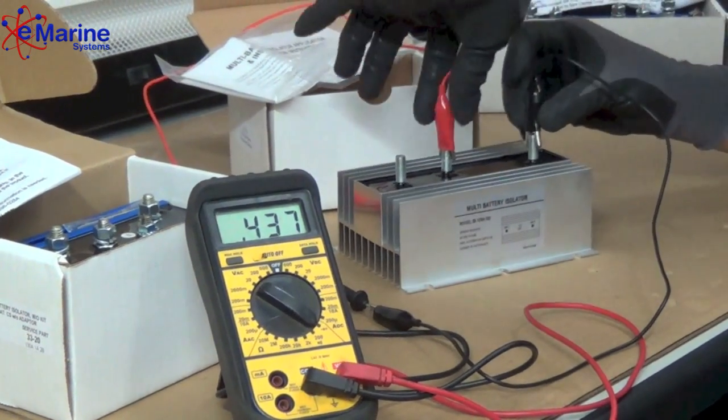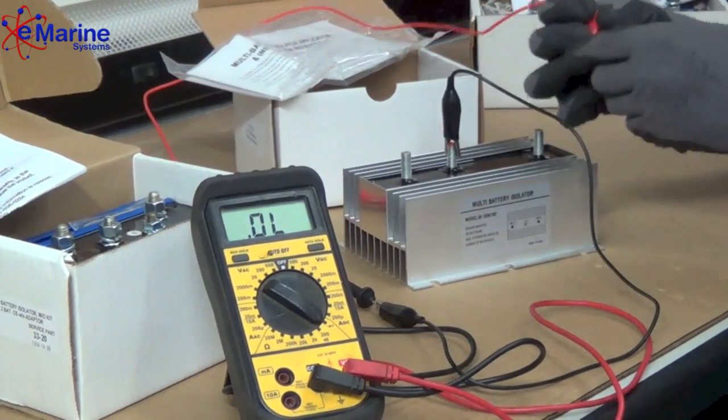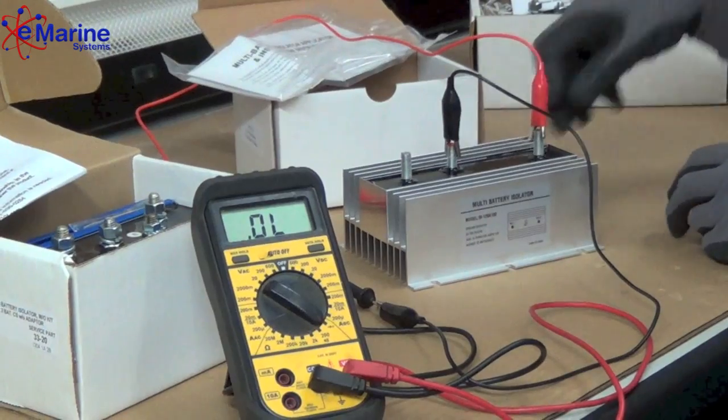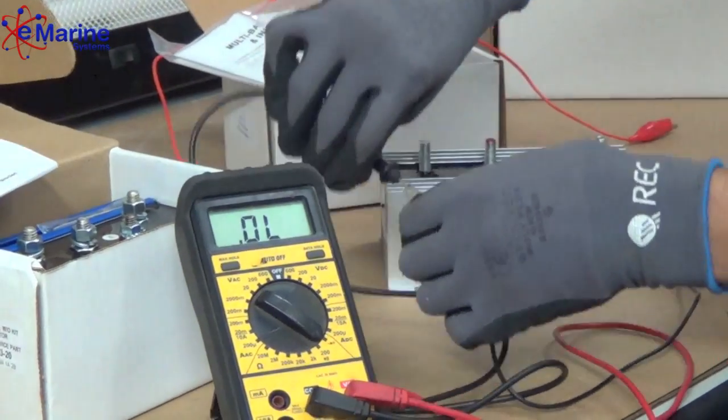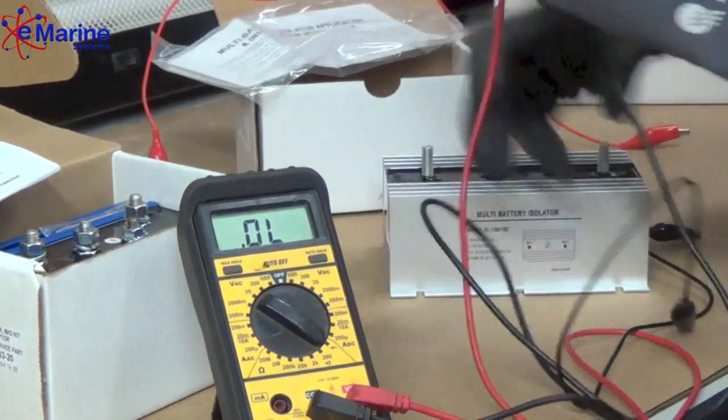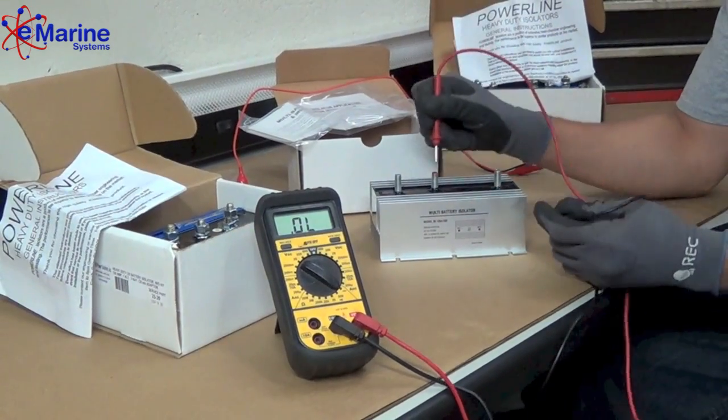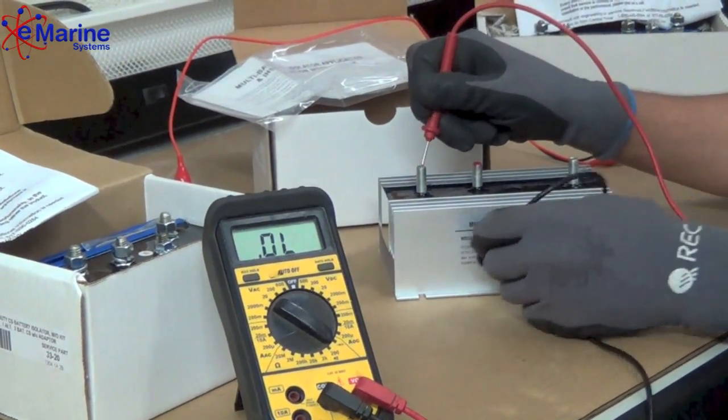And then we're going to reverse the leads again. We'll get an infinite reading, indicating that electricity will not flow in that direction. After that, we want to check each post. First, we're going to go from the post to the chassis or the heat sink, and that should be infinite as well. We should not have an open circuit there.